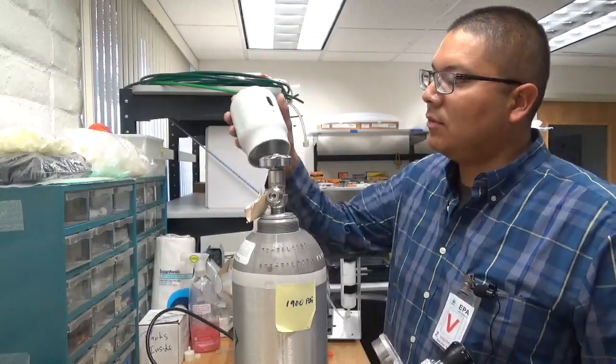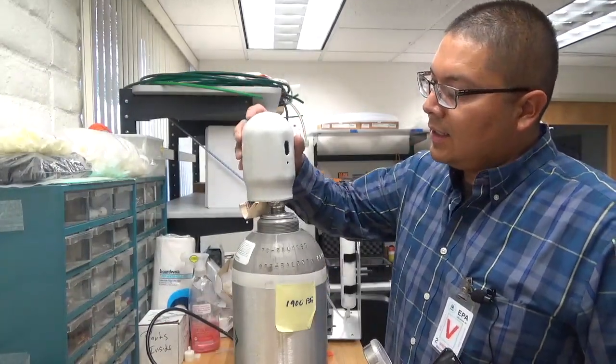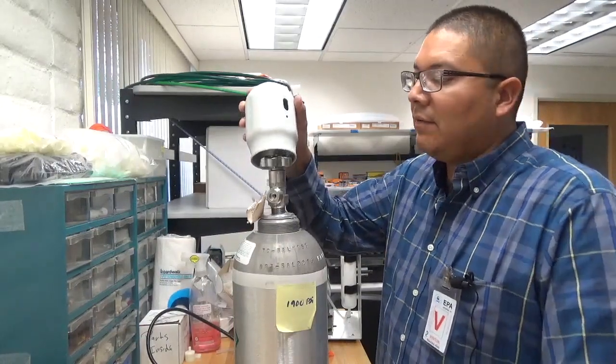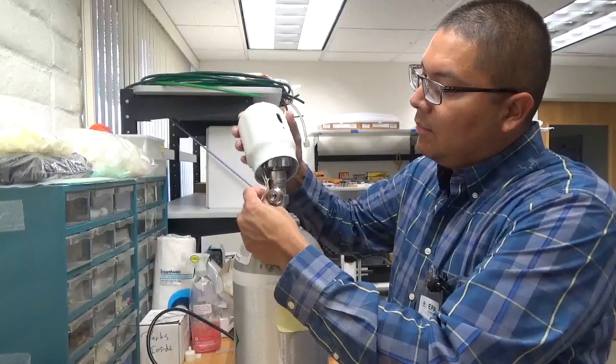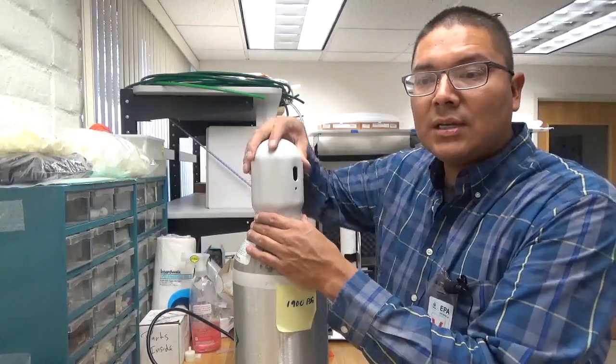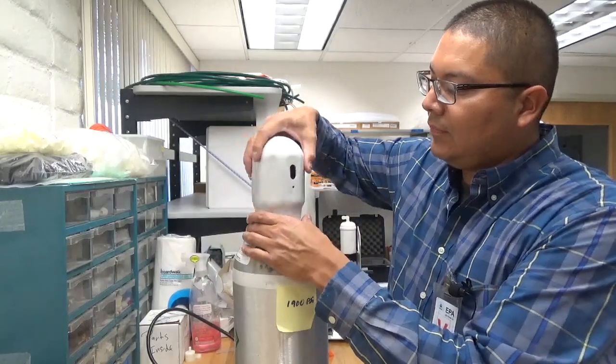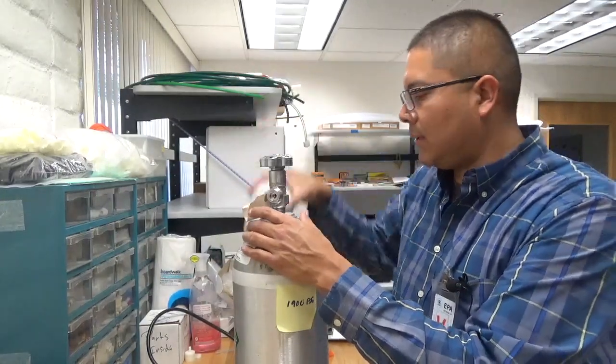Typically your gas cylinder will come with a cylinder valve cover and you want to make sure that the cylinder valve cover is removed. Anytime you transport it, make sure you return the cylinder valve cover back to its place and it just screws off the top like that.